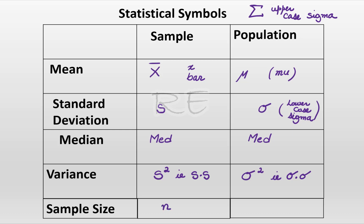For the sample size, we use lowercase n. And for the population sample size, we use capital N, or big N.